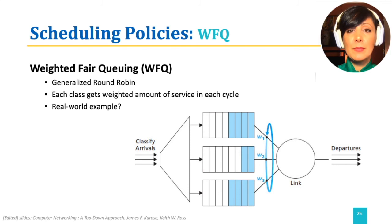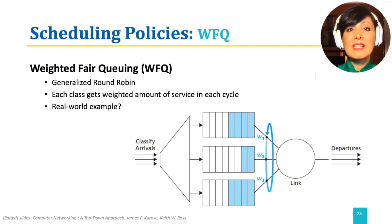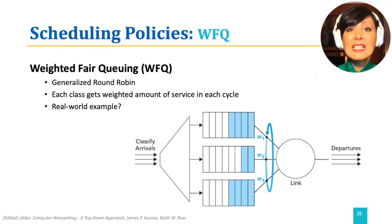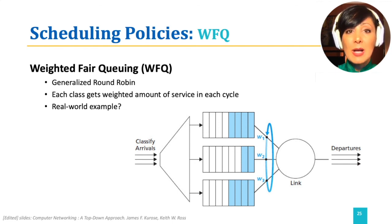For example, if w1, the weight of q1, is 1, w2 is 4, and w3 is 2, then in each round it will schedule one packet from q1, 4 from q2, and 2 from q3. However, as depicted in the figure, q2 might have only two packets when a round of scheduling happens. In this case, any available packets up to the weight limit will be served before going to the next queue in the round, making the serving of 1, 2, and 2 packets in round 1 for q1, q2, and q3 respectively.